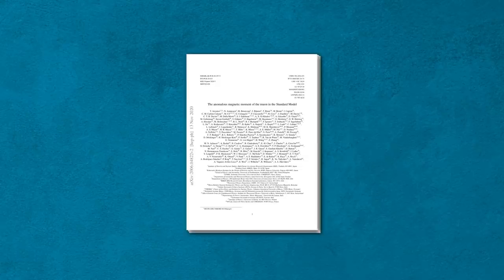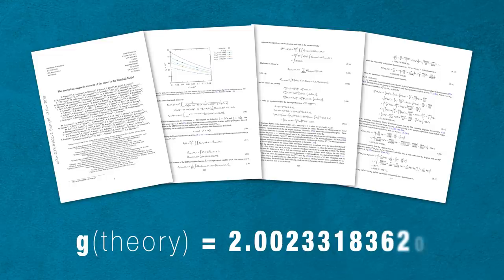In June of 2020, a collaboration of more than 170 scientists completed an extraordinarily complex set of calculations and arrived at this value for the muon's g-factor.